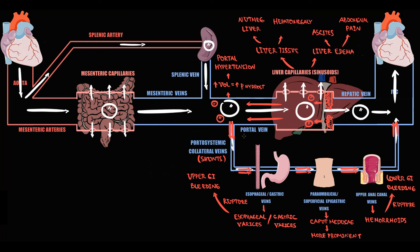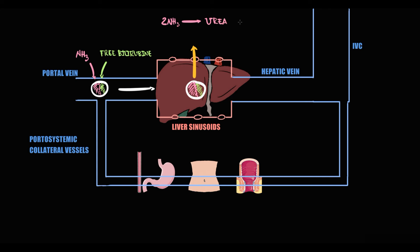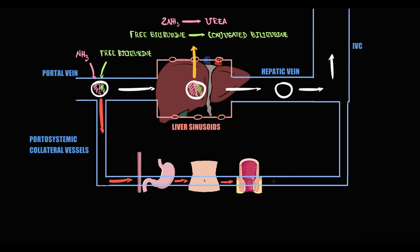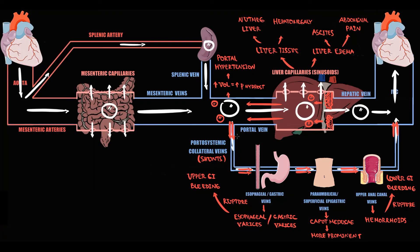Flow that bypasses the liver is non-physiologic. In our blood there are dangerous substances such as free ammonia and unconjugated bilirubin, and the organ providing their detoxification is the liver. Normally, the portal vein delivers blood to the liver, where the liver converts dangerous ammonia into urea — a less harmful substance — and conjugates bilirubin, before blood passes to the inferior vena cava. But blood that flows into shunts bypasses the liver and undergoes no detoxification. As a result, increasing blood ammonia levels can cause hepatic encephalopathy, and increasing free bilirubin levels manifest as jaundice.